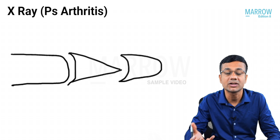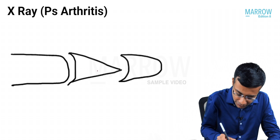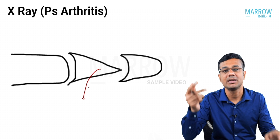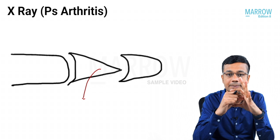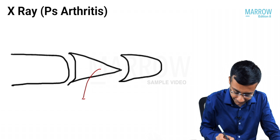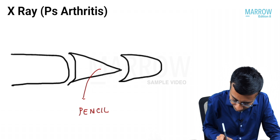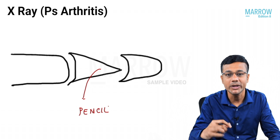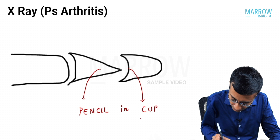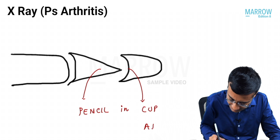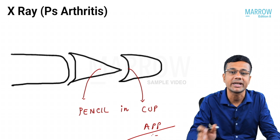Regarding psoriatic arthropathy and X-ray findings: the proximal bone is seen tapering like a pencil into the distal cup. The proximal bone is compared to a pencil going into the distal cup. This is called the pencil-in-cup appearance, which is very important for psoriatic arthropathy.